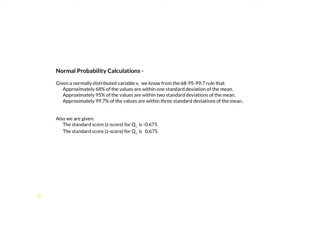We are also given that the standard score or z-score for Q1 is negative 0.675, and the standard score or z-score for Q3, the third quartile or 75th percentile, is 0.675. That's all the information you need to calculate the normal probabilities in this chapter. You do not need to use the standard normal table.